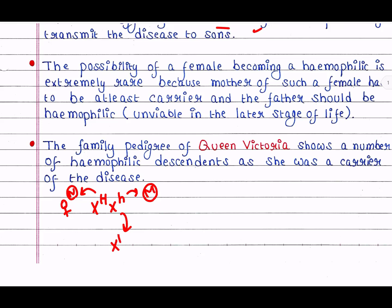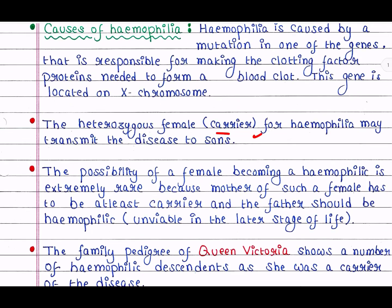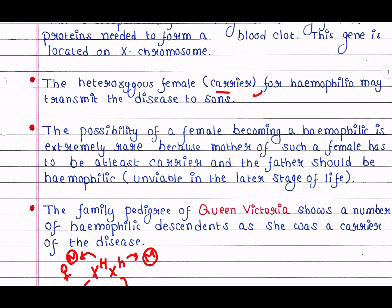If a son receives X-small-h and Y, he will have hemophilia. But if he is lucky, he will get X-capital-H and Y, in which case he is safe. Otherwise, he will receive X-small-h and be hemophilic, since only one X chromosome is present in males. The possibility of a female becoming hemophilic is extremely rare, because the mother of such a female must be at least a carrier and the father must be hemophilic — and hemophilic males are often unviable in later stages of life.